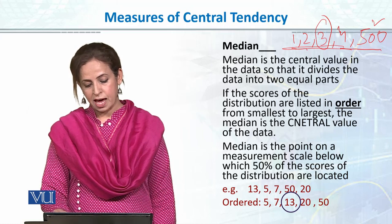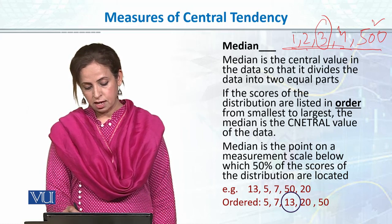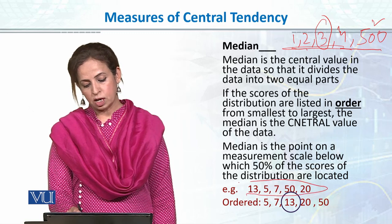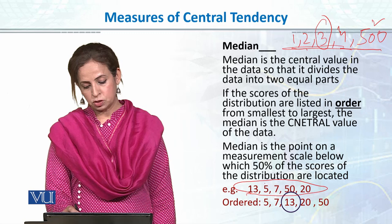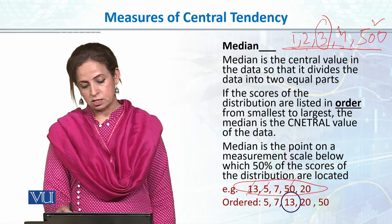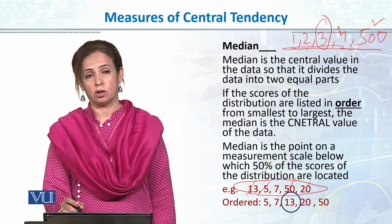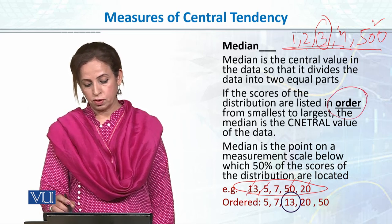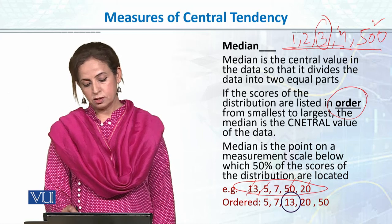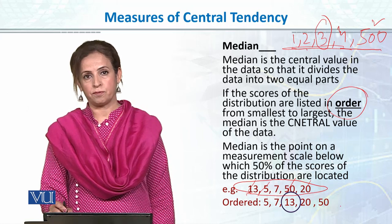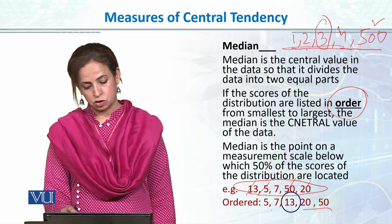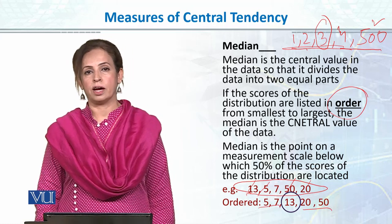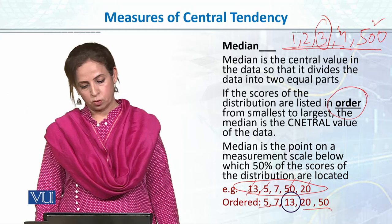For example, if we have to find the median for this data: thirteen, five, seven, fifty, twenty — you cannot jump to the central value directly, which is wrong. Always remember that median is the central value of the ordered data, so we will organize them in order: five, seven, thirteen, twenty, fifty, and then we will find the center of the distribution, which is thirteen. This is how we find the median for ungrouped data.